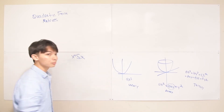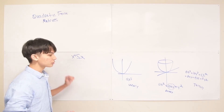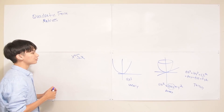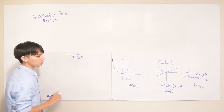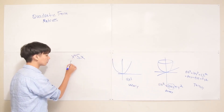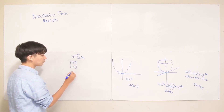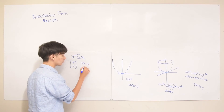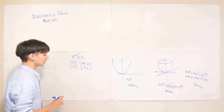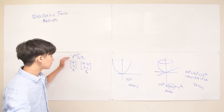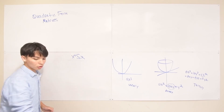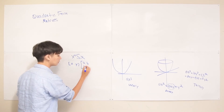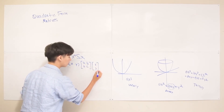Let's see if we can expand x transpose Sx to get the binary quadratic form. We have two variables x and y, so our vector x is going to be [x, y]. Our symmetric matrix S we'll write with generic terms a, b, b, c — with two b's because it has to be symmetric. So x transpose is [x, y], S is [[a, b], [b, c]], and x is [x, y]. Let's multiply these out.